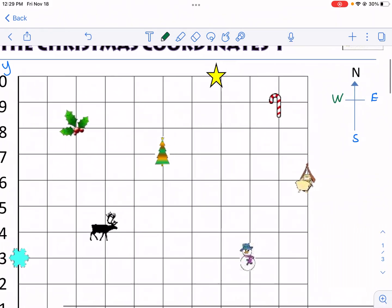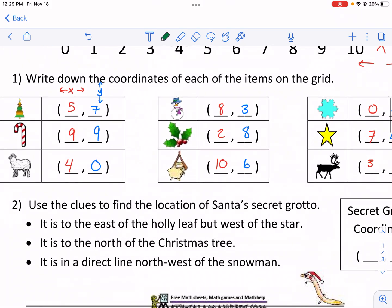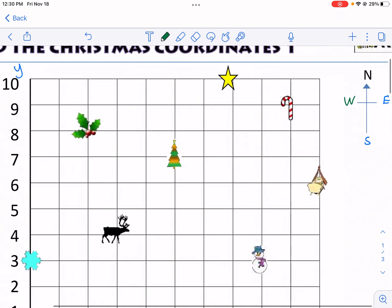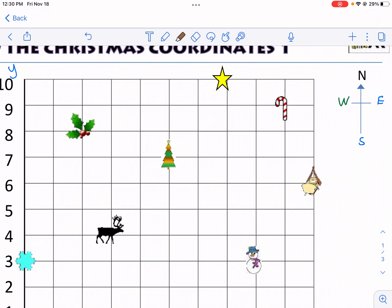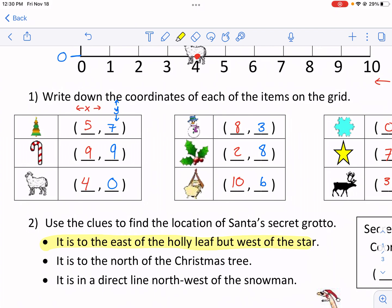So west is that way to the left. East is to the right. North is up. South is down. So it is to the east of the holly leaf, but west of the star. West of the star would be to the left of the star. Let me get out a highlight. I'm going to highlight the region that I think it's going to be in. So it's to the west of the star, but it's to the east of the holly leaf. So at the holly leaf, I'm going to stop, and I know it's anywhere in this area. I'm going to narrow it down after my second clue. Second, it is to the north of the Christmas tree.